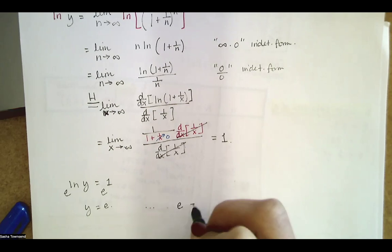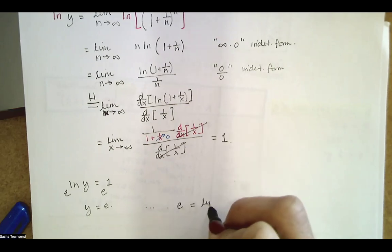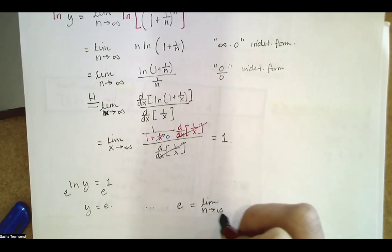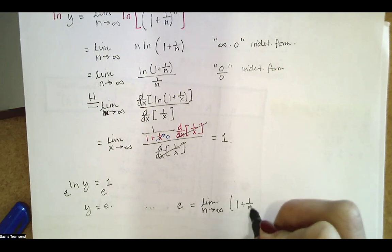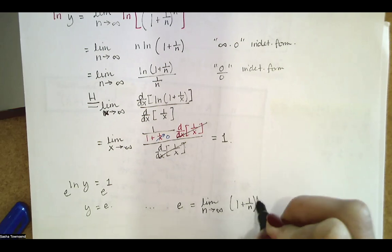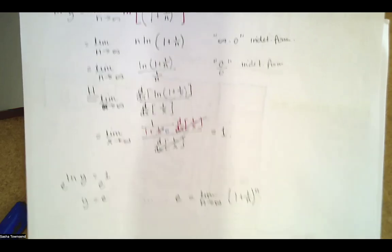So the natural log of y equals one. Exponentiating both sides gives y equals e. Therefore, the limit as n goes to infinity of (one plus one over n) raised to the n equals e.